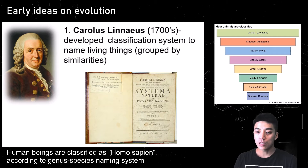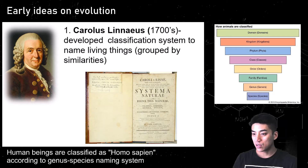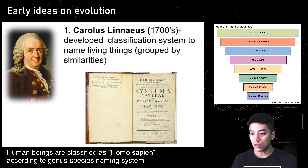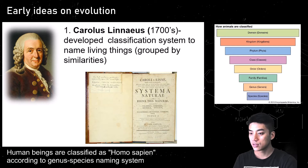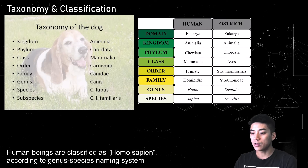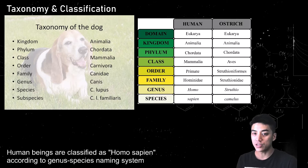Human beings are classified as Homo sapiens according to the genus-species naming system. You typically want to look at the two most specific levels — genus and species. Homo would be the genus, which encompasses a lot of different primates, and sapiens would be our species. Linnaeus clearly had an idea that maybe we're all linked by a common ancestor, which is why there was a need to classify all these different species.